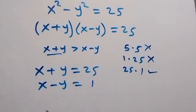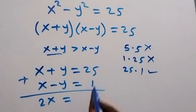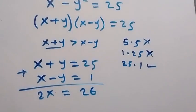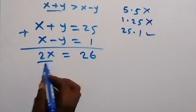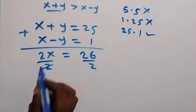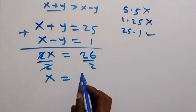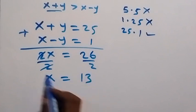Then from here we eliminate y. x plus x, 2x from here, equals to 25 plus 1, that's 26. Then we divide by 2 from here so as to cancel this 2. Then we are left with x which is equals to 13 from here. So x is 13.